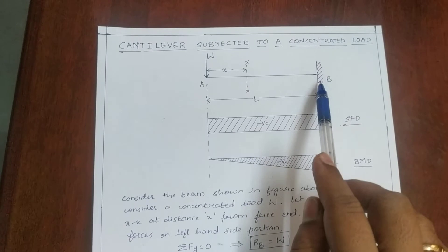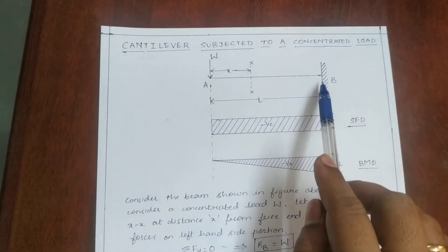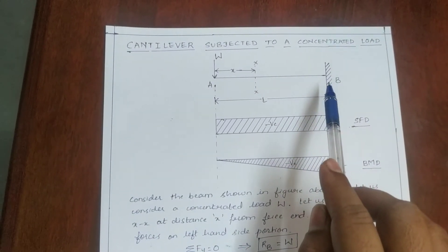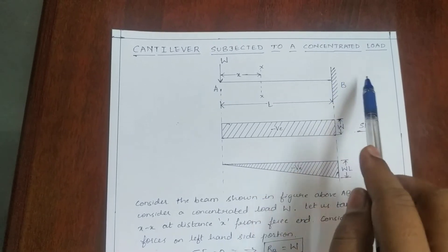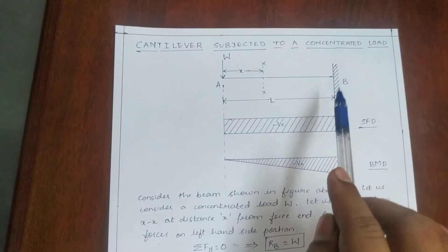We always know that at the fixed support there are always three reactions: one is the vertical, horizontal, and a moment.